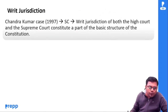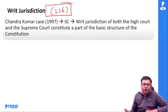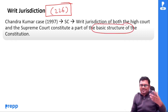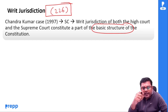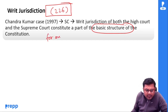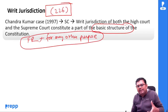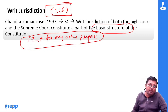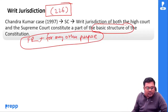Writ jurisdiction under Article 226 — Supreme Court केवल fundamental rights के case में writ issue कर सकता है, जबकि जो High Court है, वो for any other purpose plus fundamental rights writ issue कर सकता है। अगर कोई legal right भी आपका violate होता है, तो आप High Court जा सकते हो, but आप Supreme Court नहीं जा सकते। This is writ jurisdiction of High Court।